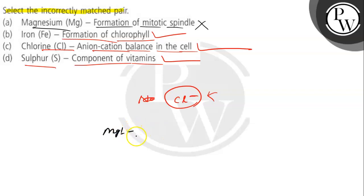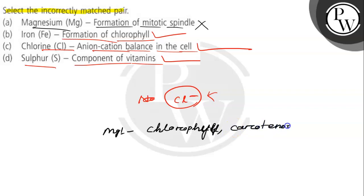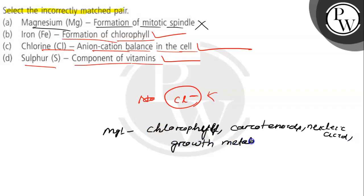Magnesium has a major function in the formation of chlorophyll. It also participates in the formation of carotenoids, nucleic acid formation, growth metabolism, and also in nodule formation in leguminous plants.